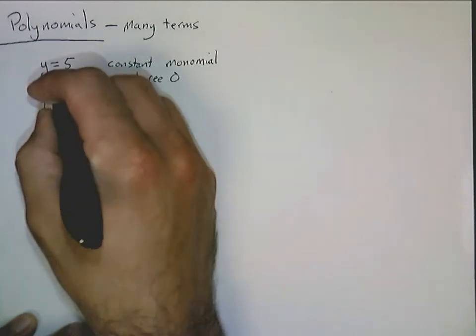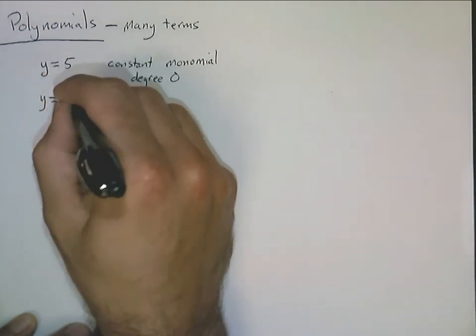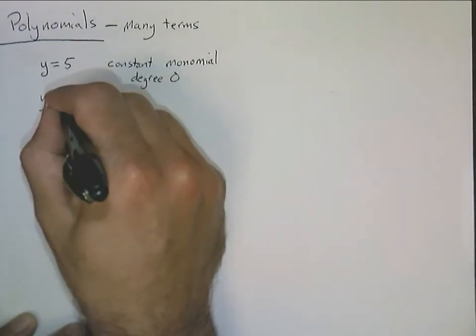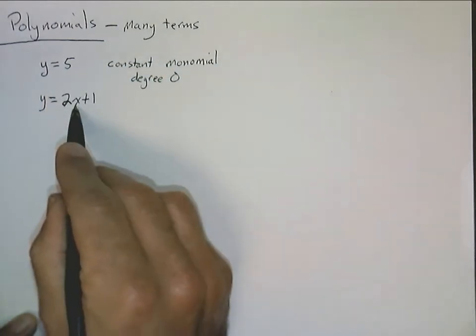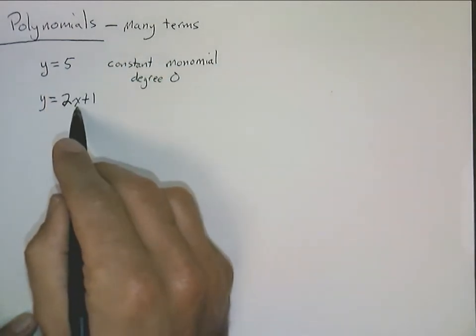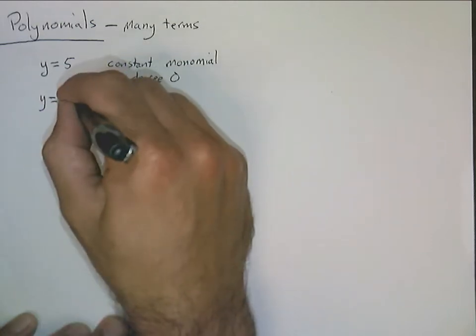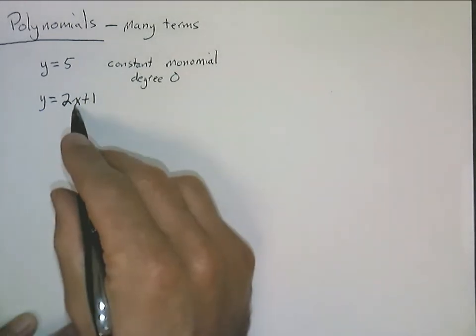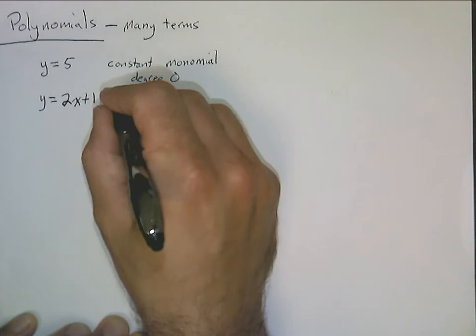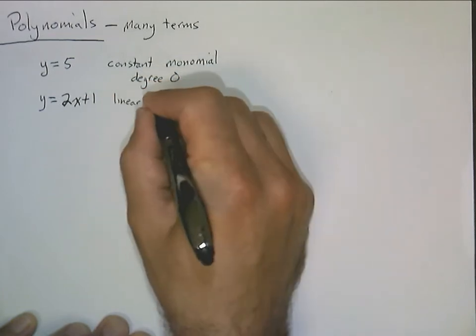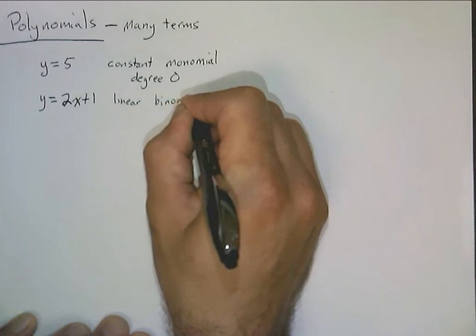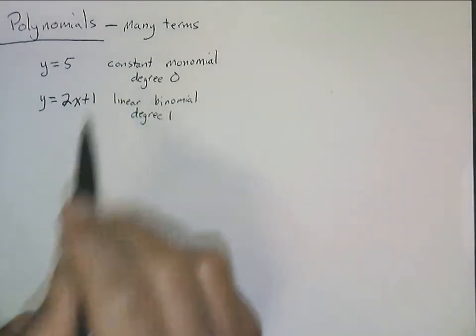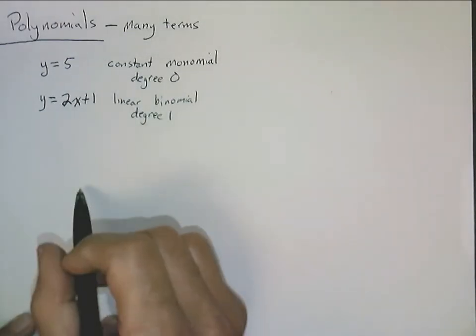We could then move up and say let's look at something like y is equal to 2x plus 1. We've seen this before, or things like this. 2x plus 1. The highest power of x that we see here is just 1, so this would be a degree one polynomial. And it has two terms, so this would be a binomial. But if it's degree one, we also say that the thing is linear. So this is a linear binomial. So we say this thing has degree one. Degree one, we say it has the special name of linear. Degree zero has a special name of constant.